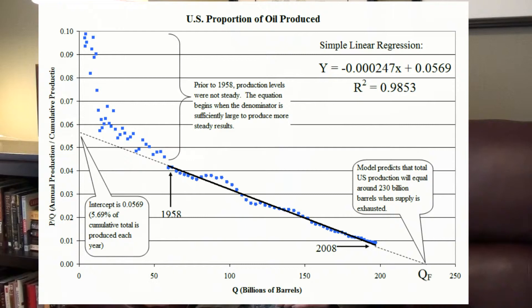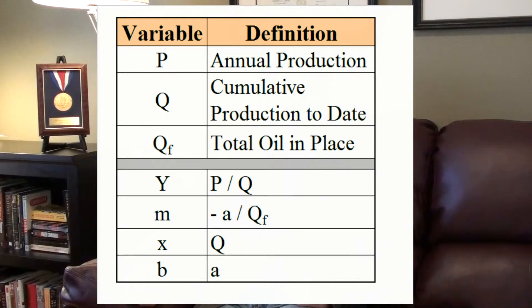Plotting the line represented by the regression equation gives x and y intercepts. The x-intercept is crucial because this represents the total amount of oil in place, which is what we need to build Hubbert's curve. In this case, the x-intercept estimates that there were about 230 billion barrels of oil in place for the United States. The slope in the regression equation is also important — it represents the annual production as a fraction of cumulative production. This completes the set of variables needed to form a production function, and the chart to the left shows the translation of the equation to the oil production variables.